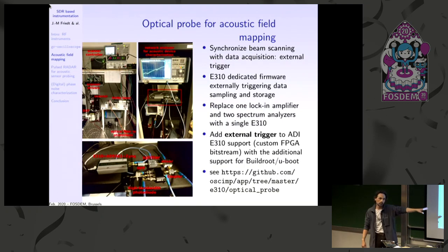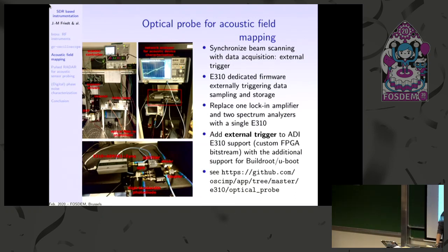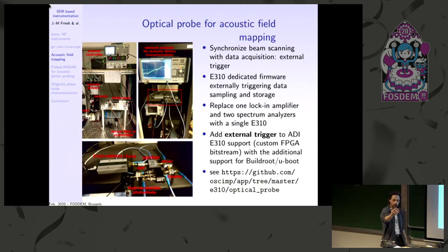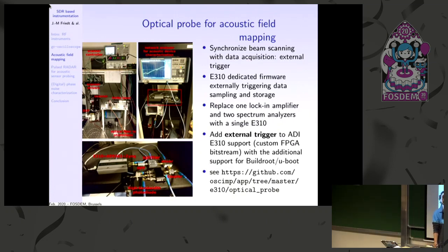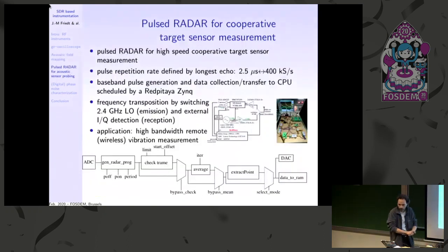The initial experiment used a lock-in amplifier, two spectrum analyzers, and a network analyzer. All of this has been replaced by a single E310, making the setup completely autonomous. The custom firmware uploaded to the USRP via the OpenEmbedded digital framework adds external triggering of the data stream — the stream is triggered by an external signal — which is the key firmware novelty in this work.